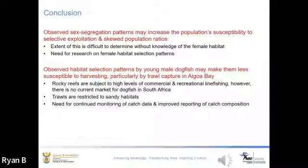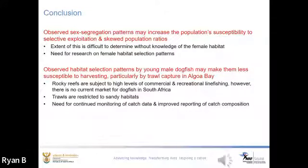The observed patterns have two major implications. First, sex segregation patterns may increase population susceptibility to selective exploitation and skewed population ratios; without knowledge of the female habitat, the extent of this is difficult to determine. Second, the observed habitat selection patterns by young male dogfish in the bay may make them less susceptible to harvesting, particularly by trawl which is restricted to sandy bottomed habitats. Although rocky reefs are subject to high levels of line fishing, there is no current market value for dogfish in South Africa. There is a need for continued monitoring of catch data and improved reporting of catch composition. Thank you very much.